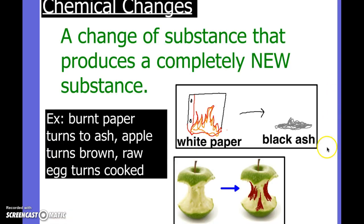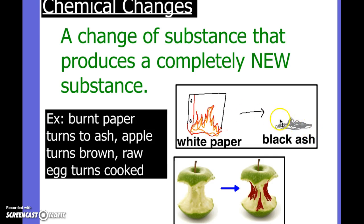Here is a review of a chemical change. A chemical change is when you actually do produce a brand new substance. Like if you have paper and it gets burned, then it turns into ashes. The ashes weren't there before, so a chemical reaction has occurred — you know that because you produced a brand new substance.